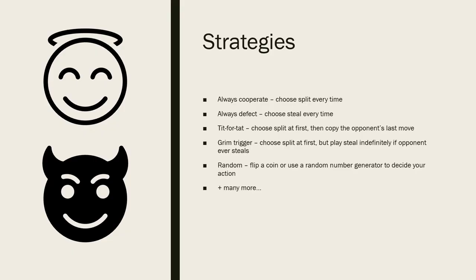As this is a very famous game, game theorists have developed many strategies that we could use when playing. For example, you could always cooperate, meaning choosing Split every time. Or you could play Steal every time. You might choose to copy what your opponent did in their last move, sometimes known as tit for tat or copycat. Grim Trigger is where you play Split, but if your opponent plays Steal just once, you punish them by playing Steal for the rest of the game. You could even decide to choose randomly each time by flipping a coin.